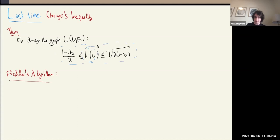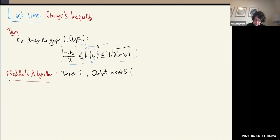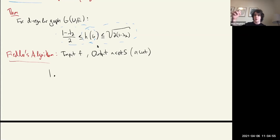Fiedler's algorithm takes as input a function on vertices and outputs a set S, or equivalently a cut. The idea is that if F has small Rayleigh quotient, we want to claim that the output cut is sparse — that the set output has poor expansion. There were three steps: the first was basically bookkeeping — we sort all of the vertices in increasing order in terms of F.